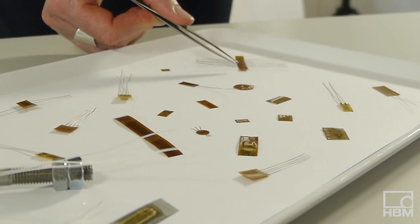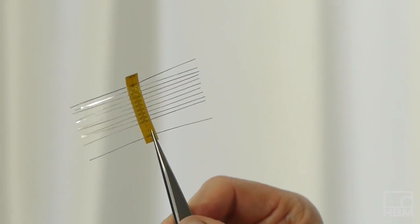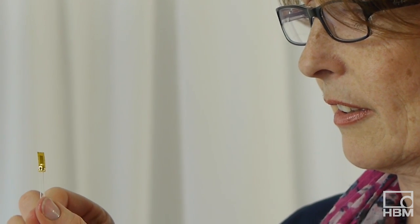For a series of strains, a strain gauge with multiple equidistantly arranged short wires is required. On our bolt, the axial strain is supposed to be measured. This will be done with a linear stress gauge.